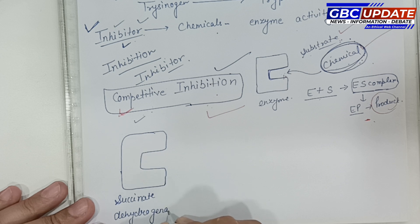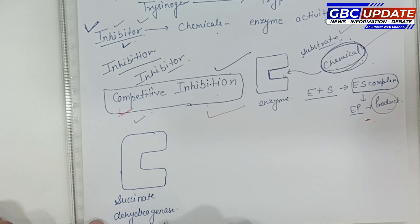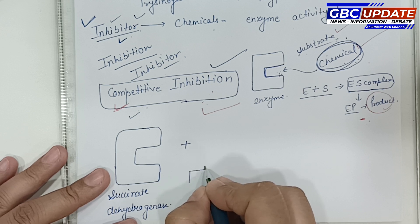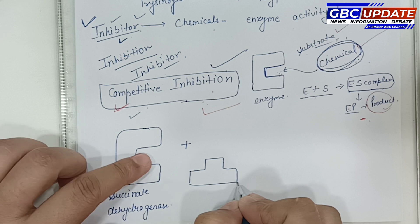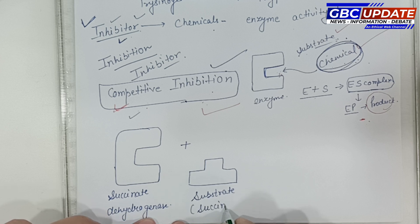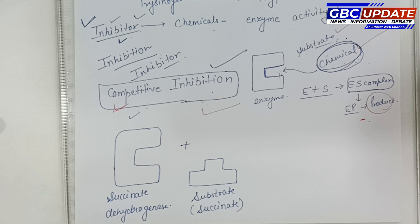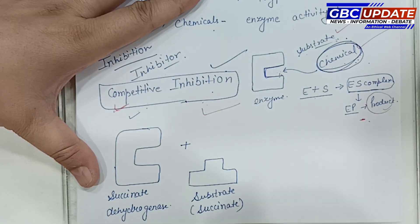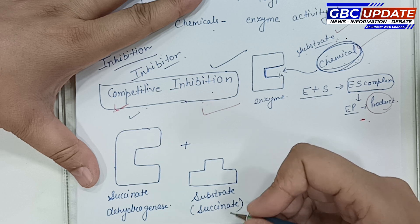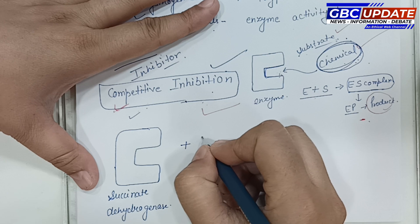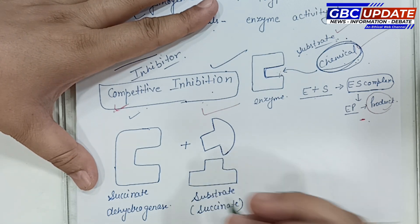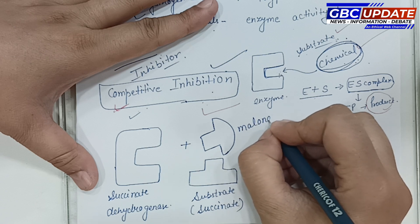The substrate for succinate dehydrogenase is succinate. In competitive inhibition, another molecular substance closely resembling the substrate competes with it. This substance is malonate. Malonate and succinate compete for the active site on succinate dehydrogenase.